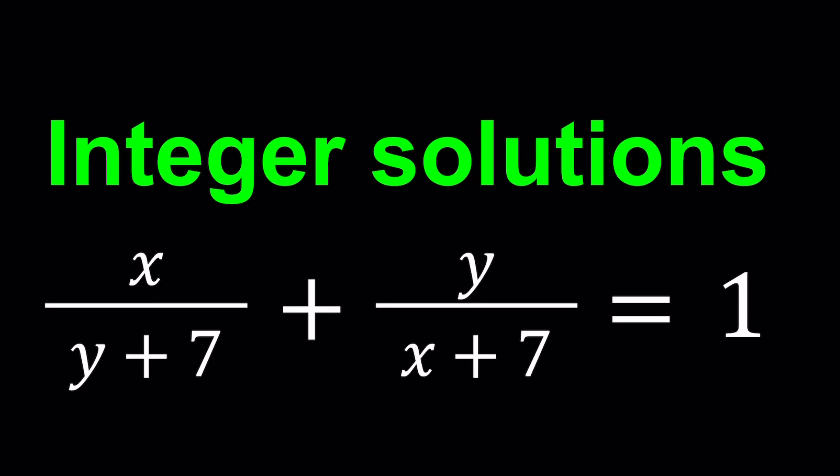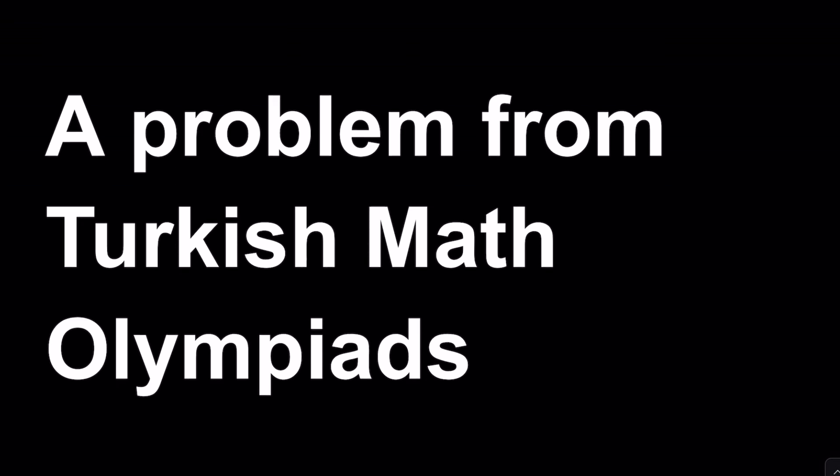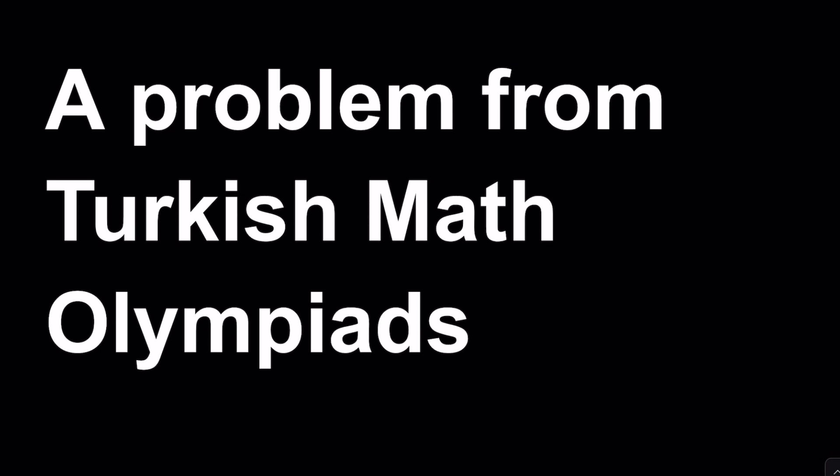Hello everyone. In this video we're going to be solving a Diophantine equation. In other words, we have this equation x over y plus 7 plus y over x plus 7 equals 1, and we're actually going to be looking for positive integer solutions. This problem comes from Turkish Math Olympiads. Pretty easy problem, so manageable, and that's why I wanted to share with you.